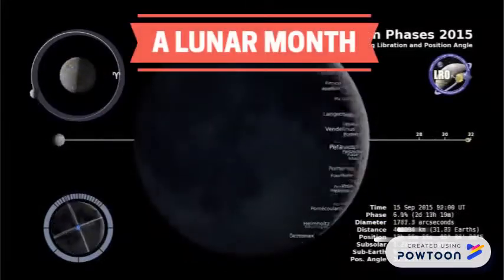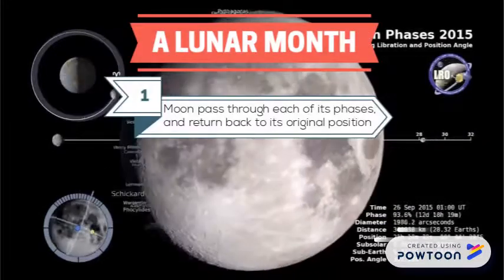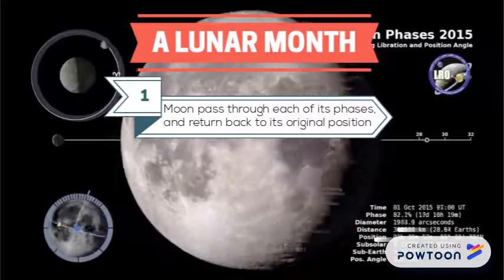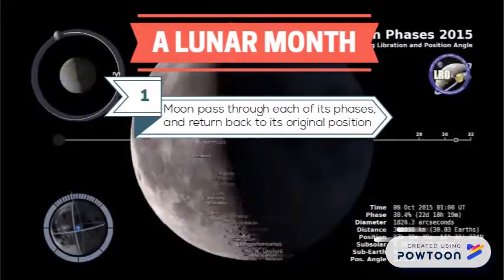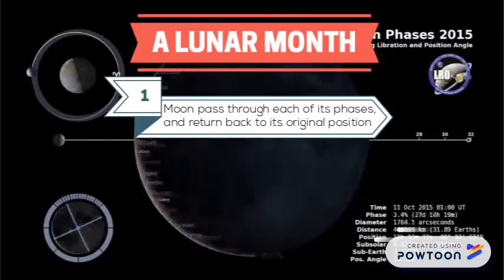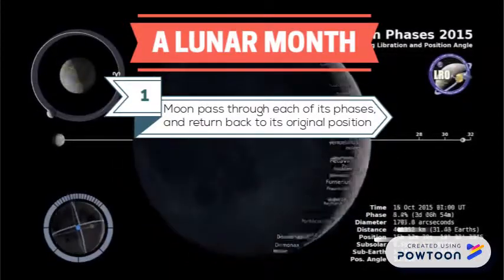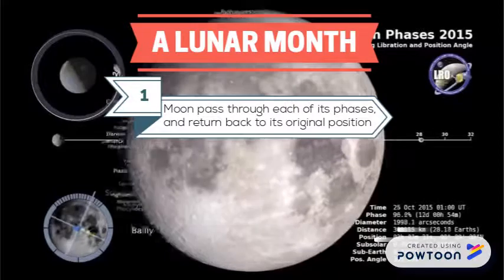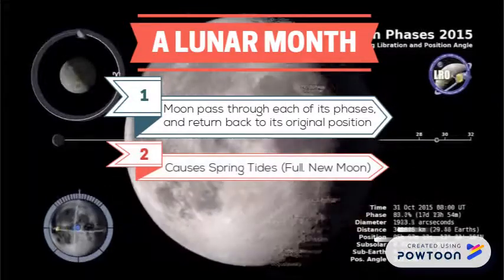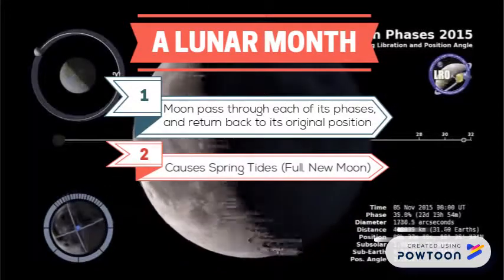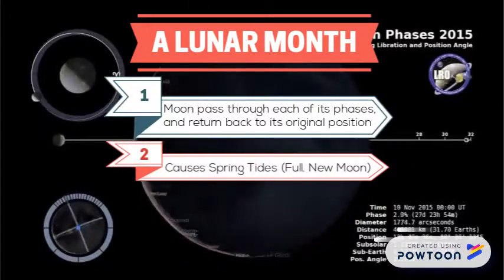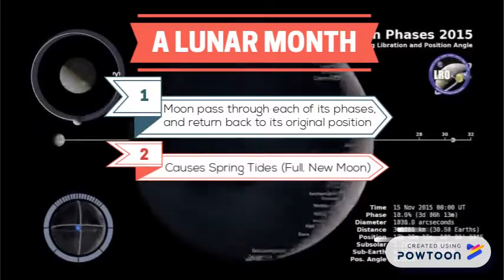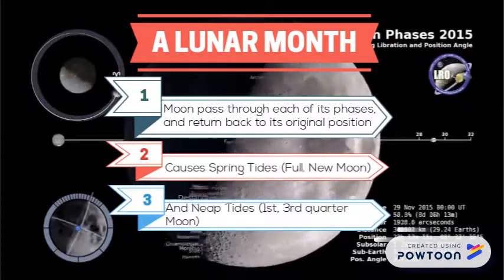A lunar month is when the moon passes through each of its phases and returns back to its original position. This causes spring tides and neap tides.